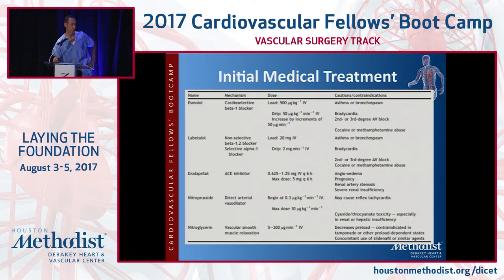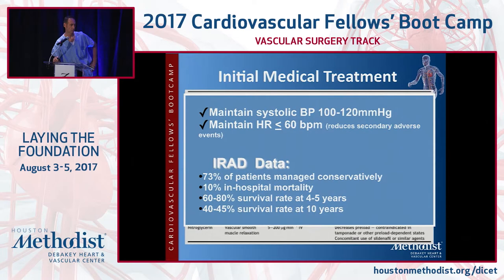For initial medical therapy, the goal is to maintain systolic blood pressure between 100 and 120 mmHg and maintain heart rate below or equal to 60. The IRAD data shows that 73% of patients are managed conservatively, with a 10% in-hospital mortality, 60 to 80% survival at four to five years, and 40 to 45% survival at 10 years — which is not bad.